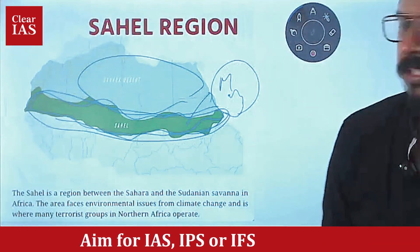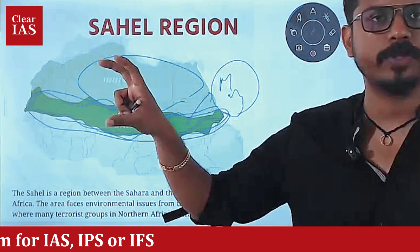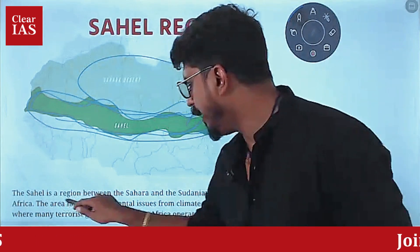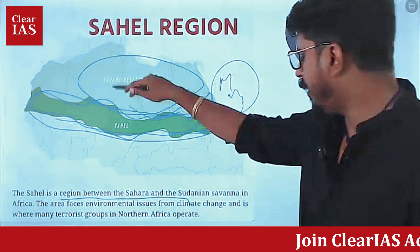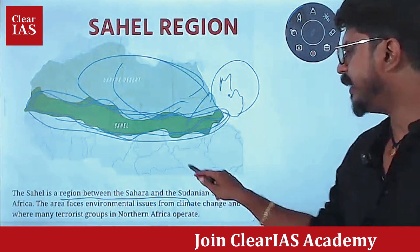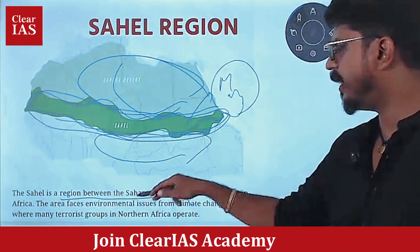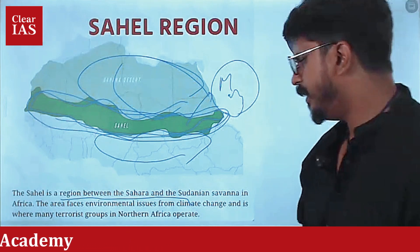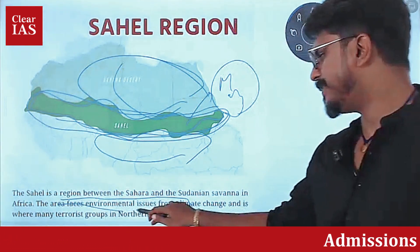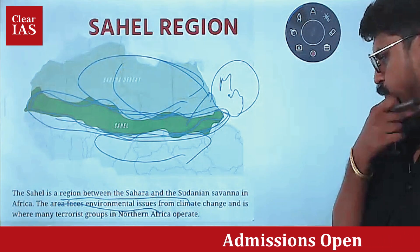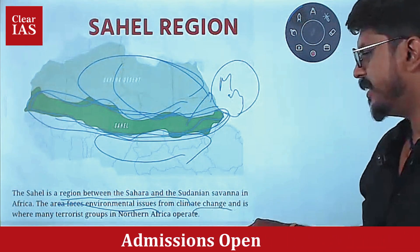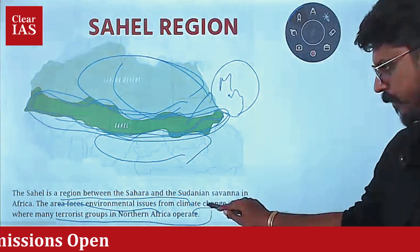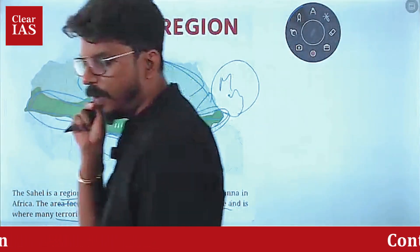You won't see such a region — it's a political region, so you won't see it in the atlas. Write down: the Sahel is the region between the Sahara Desert and the Sudanian Savannah. This area is Savannah, which we have studied. In Africa, the area faces environmental issues from climate change and is where many terrorist groups who operate in Northern Africa are based.